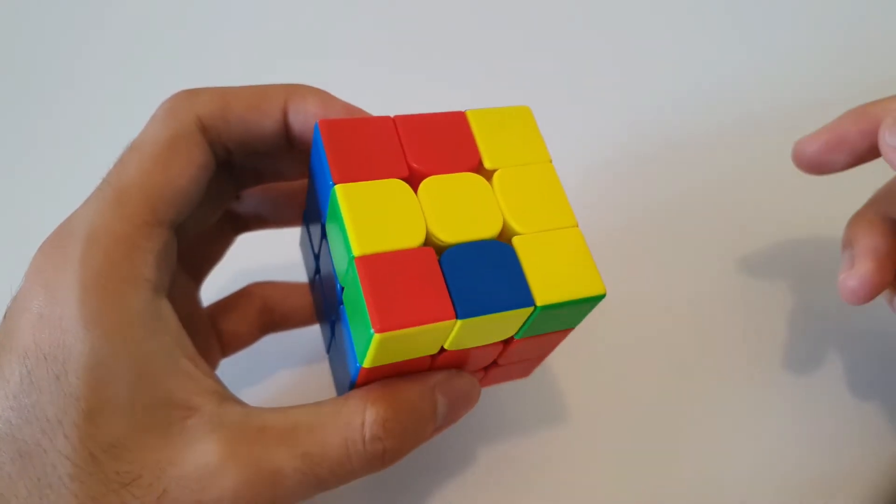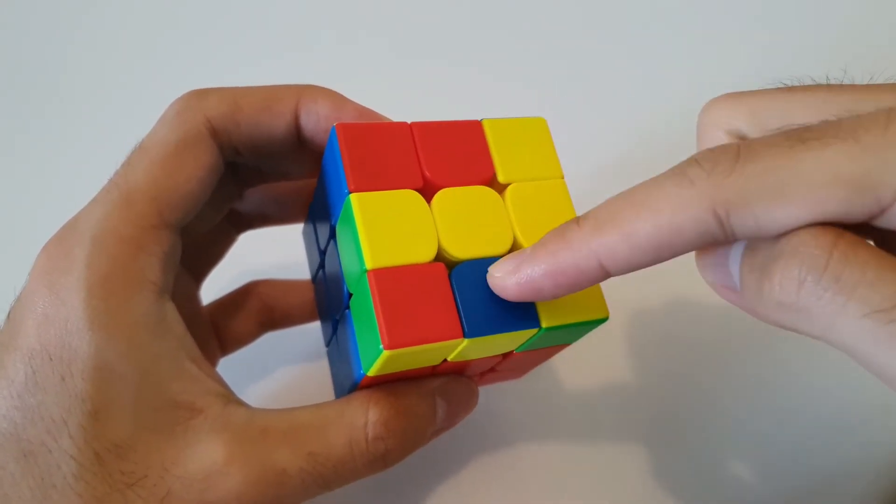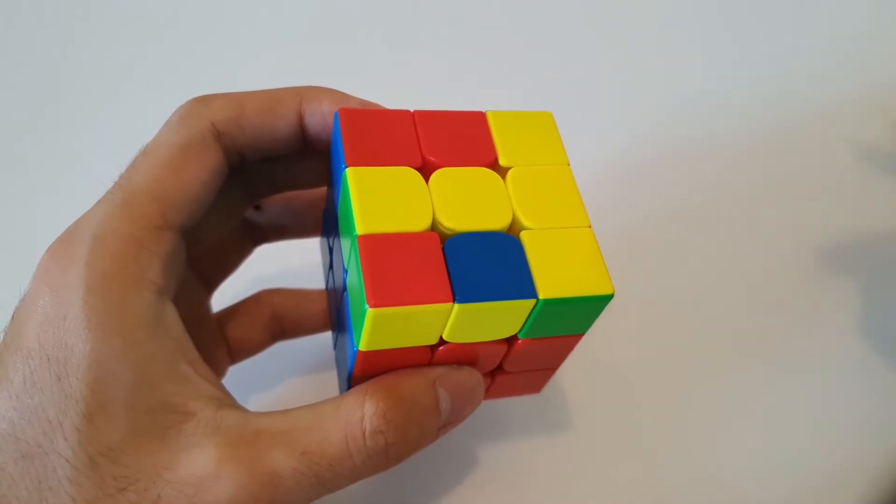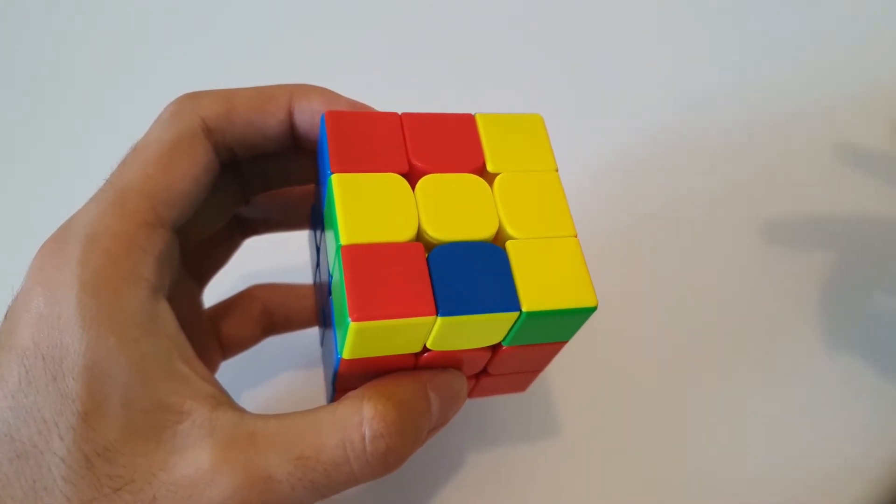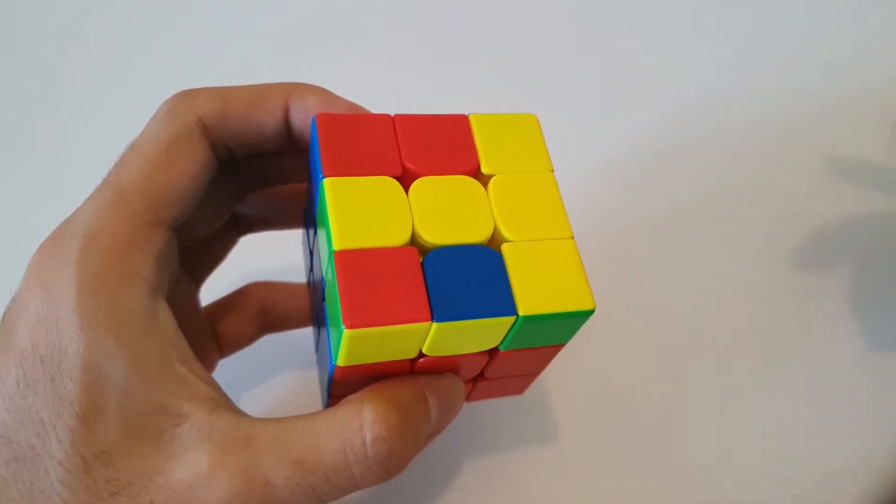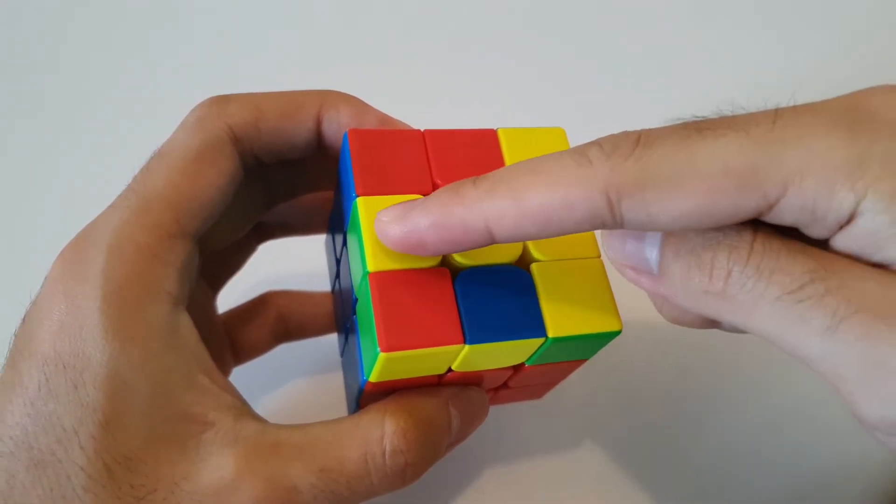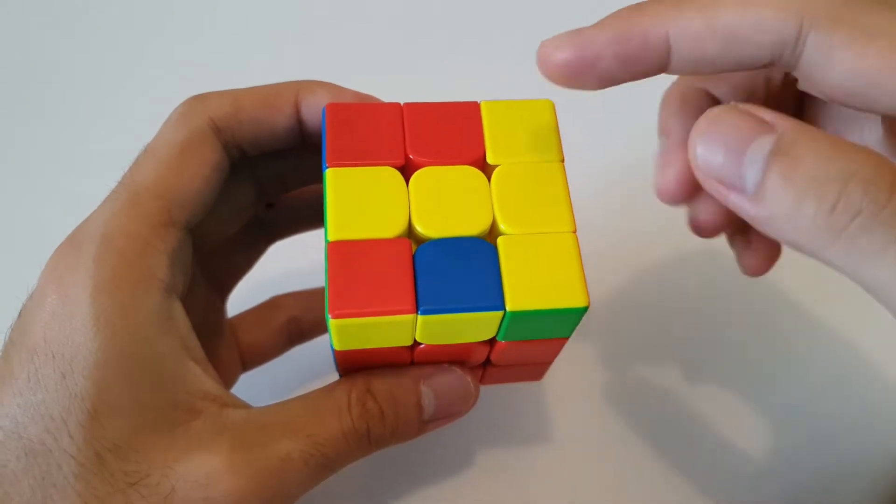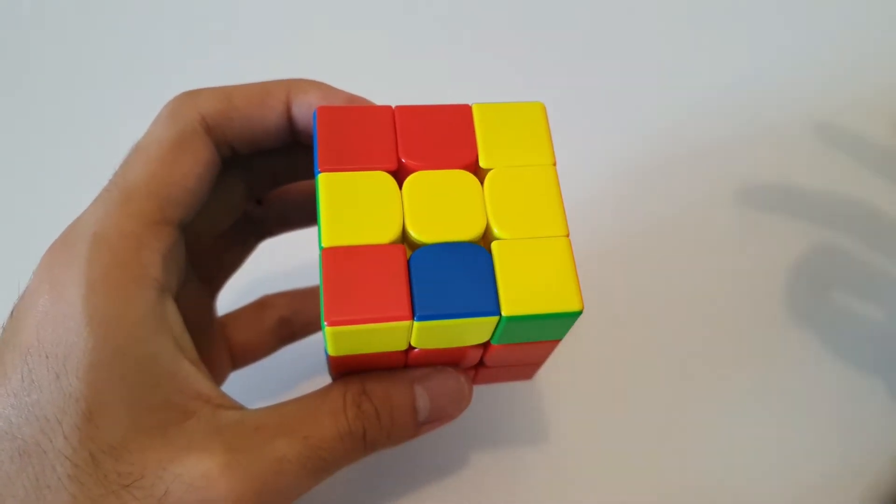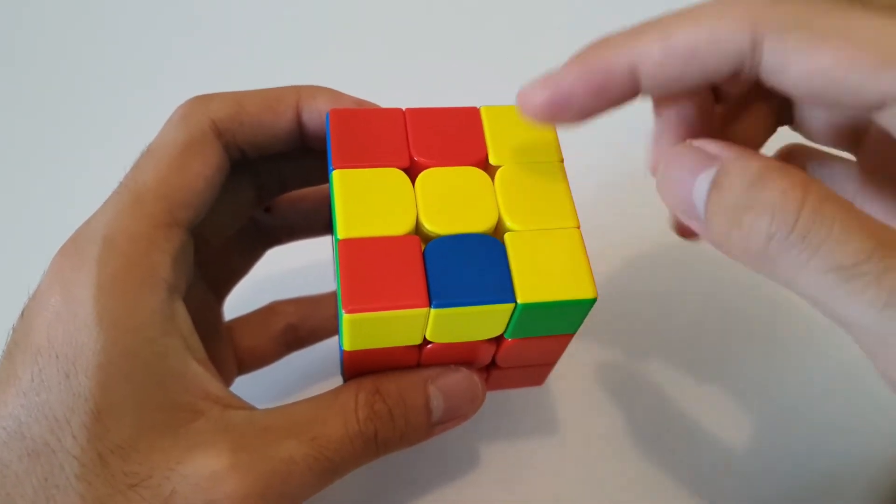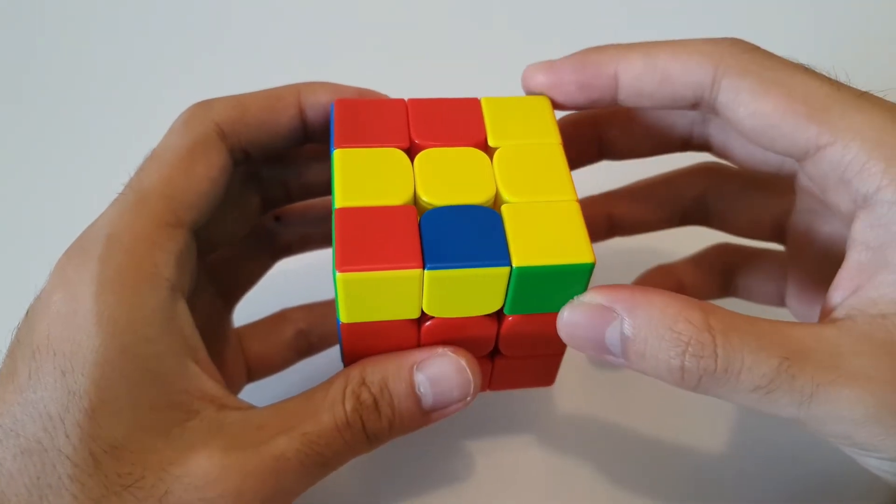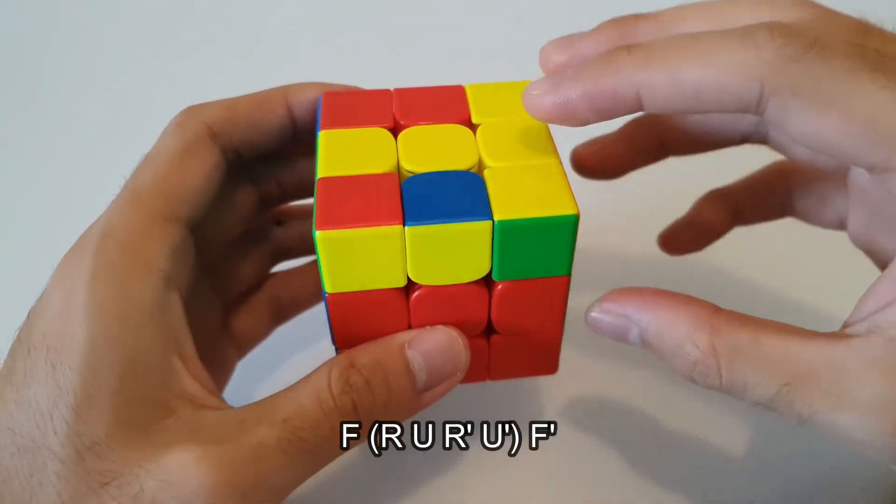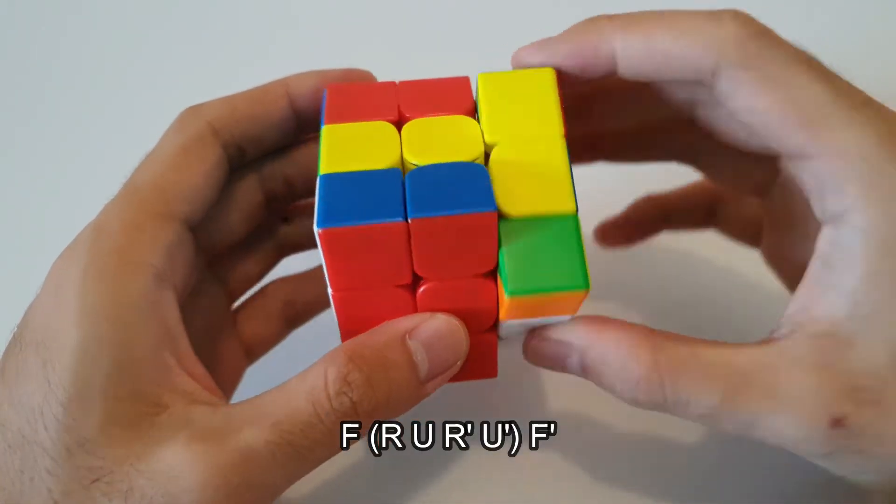So the first step with 2 Look OLL is to make the yellow cross on the top layer. There's three different cases that you can get when you get to this stage. The first case is when you have a single line. When you get a single yellow line, you want to make sure that you hold it horizontally, and you can do this algorithm to get the yellow cross on top. The algorithm is fairly straightforward to remember, it's just F, sexy, F'.